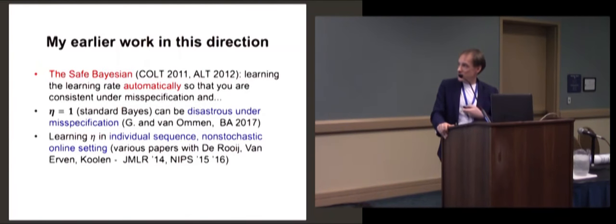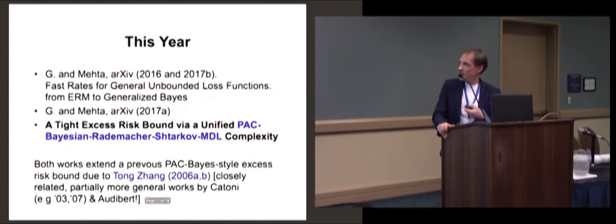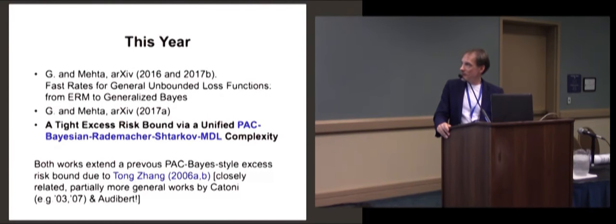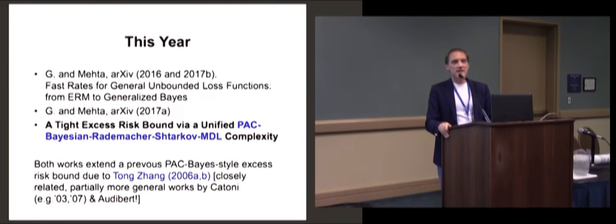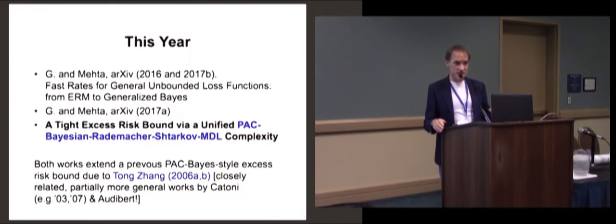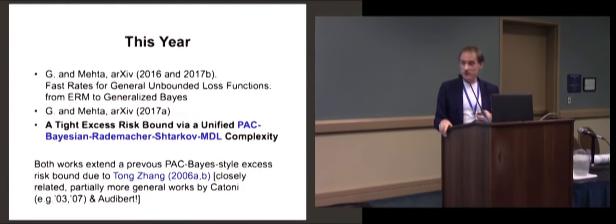I've also worked on learning eta in an individual sequence, non-stochastic setting. This year I have two papers with Nishant — I'm going to talk about both, mostly about the second one. Both papers are about extending an existing PAC-Bayesian excess risk bound due to Tom Zang. Olivier Catoni and Olivier have similar bounds which are in some sense even stronger, but it will pedagogically be far easiest if I explain our work in terms of Zang's work.